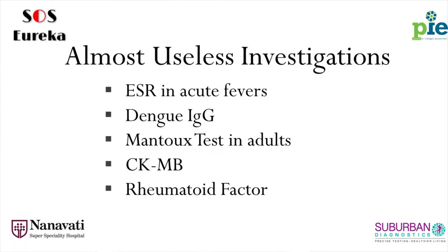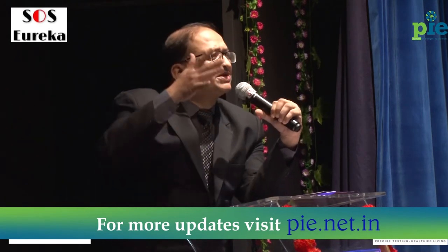Even in pediatrics, dengue IgG is an almost completely useless investigation. Whether dengue is primary or secondary, clinical monitoring of the child or adult remains the same — you must be vigilant regardless. Mantoux in children is now considered useless. In adults it is almost useless; the only utility is when definite tuberculosis is present and Mantoux comes negative, indicating immunosuppression.